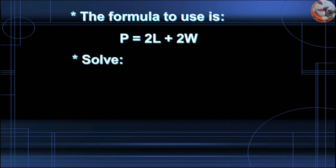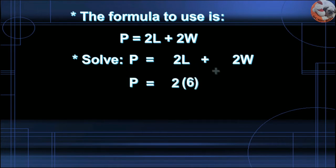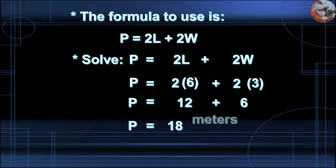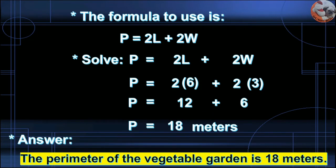The formula to use is P = 2L + 2W. Solving: P = 2 × 6 + 2 × 3. P = 12 + 6. P = 18 meters. Answer: The perimeter of the vegetable garden is 18 meters.